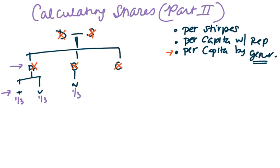So T, V, and N would get one-third each. Now this is the same result you would get if you had done per capita with representation, because you divide at the first generation with a live taker.